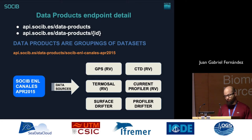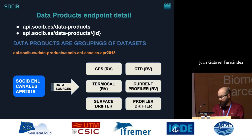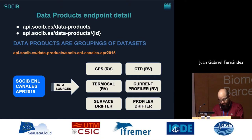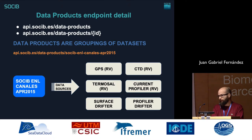I'd like to describe two more endpoints, beginning with the data products endpoint. In our model, a data product is a set of data sources with special meaning — for instance, data recovered during a campaign. In SOCIP, we carry out several Canales campaigns a year with our research vessel, and usually drifters or even gliders are deployed along the cruise. For example, the data product named 'SOCIB Endurance Line Canales April 2015', represented by that URI, contains all the data measured by instruments deployed on the vessel plus a surface drifter and a profile drifter launched during the campaign. The response contains not only the main metadata associated to the data product, but also the list of data sources.